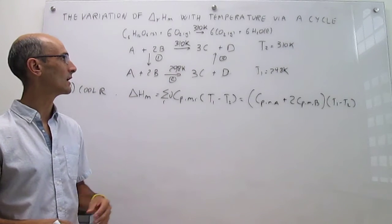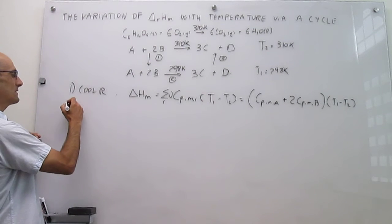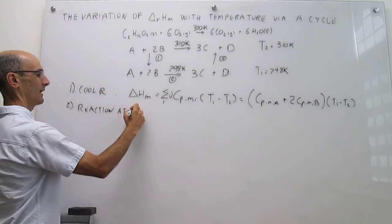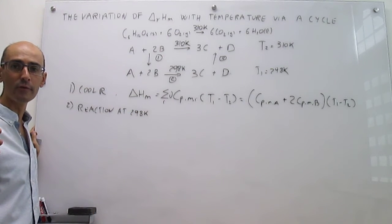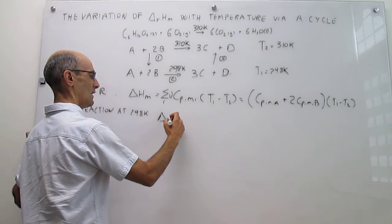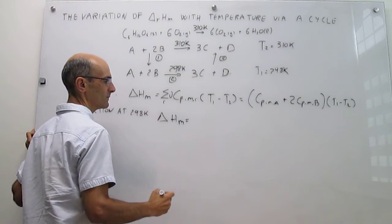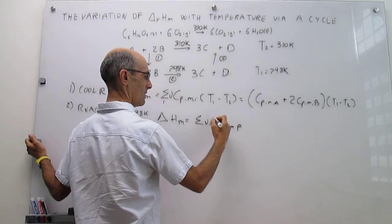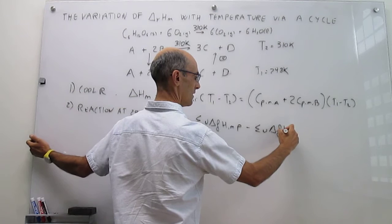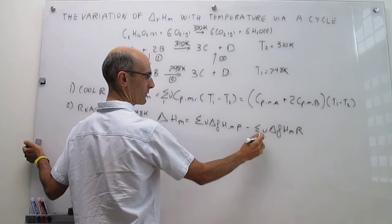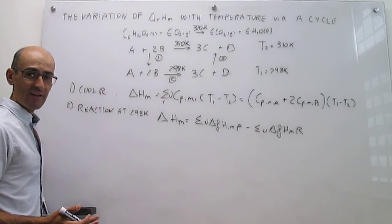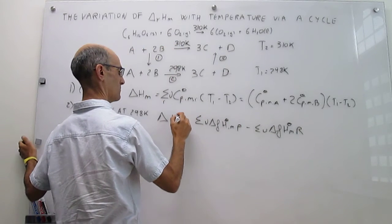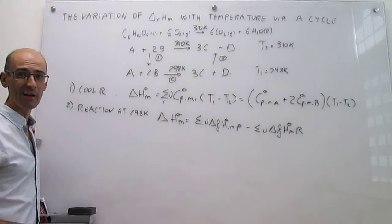That should be a negative enthalpy, because the temperature is going down from 310 to 298 Kelvin. The second step is the reaction at 298 Kelvin. This is straightforward: the molar enthalpy is simply the sum of the standard enthalpies of formation of products minus the sum of the standard enthalpies of formation of all reagents, multiplied by stoichiometric coefficients. All of these quantities carry the standard symbol, because tables are always provided under standard conditions.